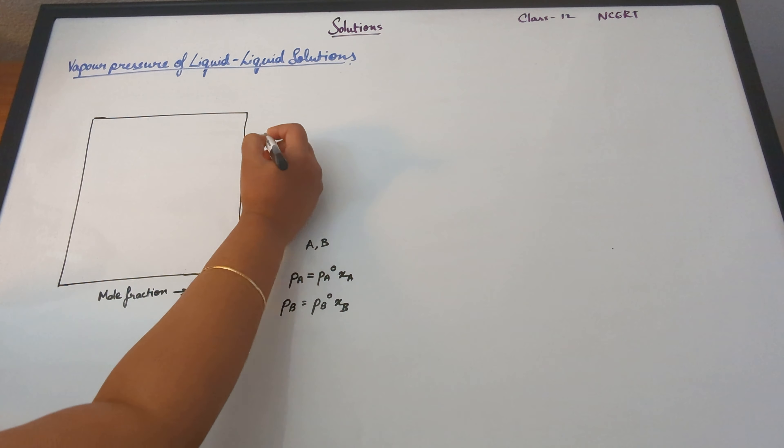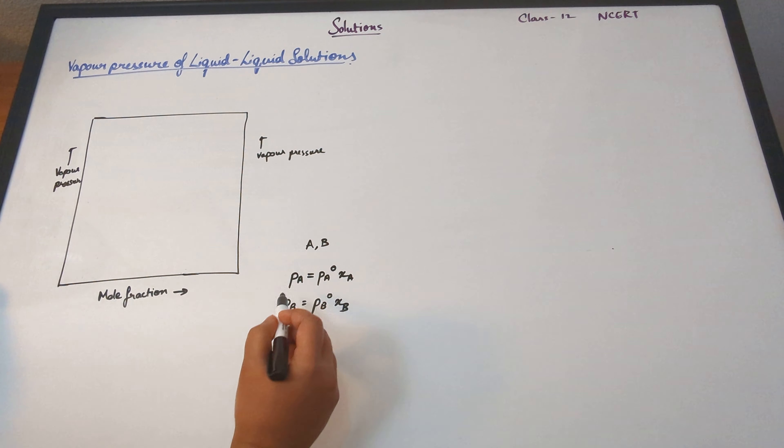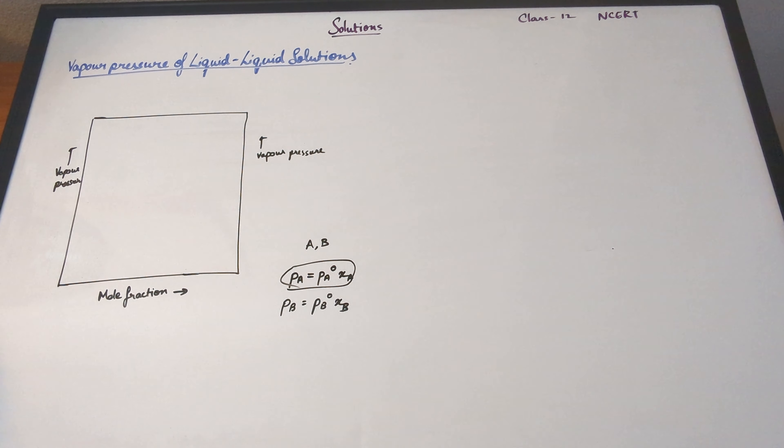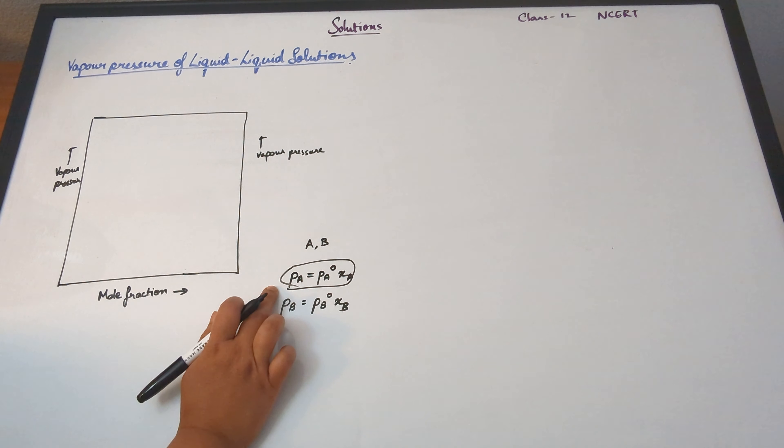Let's assume we have a solution containing two components A and B. So Pa, the partial vapor pressure of A, is equal to Pa0 — which is the vapor pressure of the pure component — multiplied by the mole fraction Xa. Similarly, Pb is going to be equal to Pb0 times Xb. This is what we've learned.